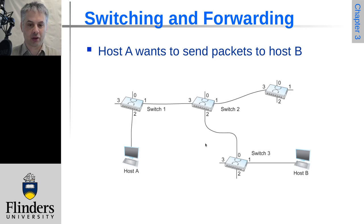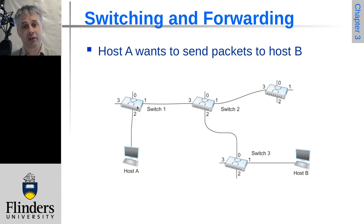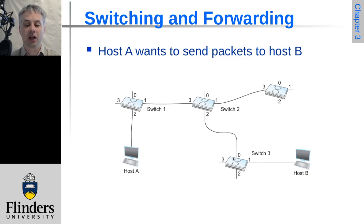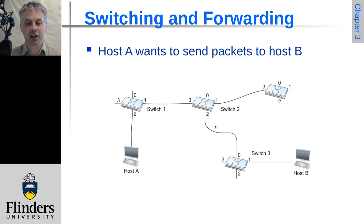So if host A wants to establish a circuit to host B to send packets, we have a bunch of switches along the way. In setting up the circuit there'll be a negotiation: switch one knows that frames coming in from host A on port two need to go out on port one; switch two gets them in on port three and sends them out on port two into switch three on port zero, which knows host B is out on port one. There will be some kind of marking in the packets or frames to indicate they belong to a particular flow or virtual circuit — on Ethernet that could be VLAN tagging, for example — and then we have a dedicated path and resource through the network.